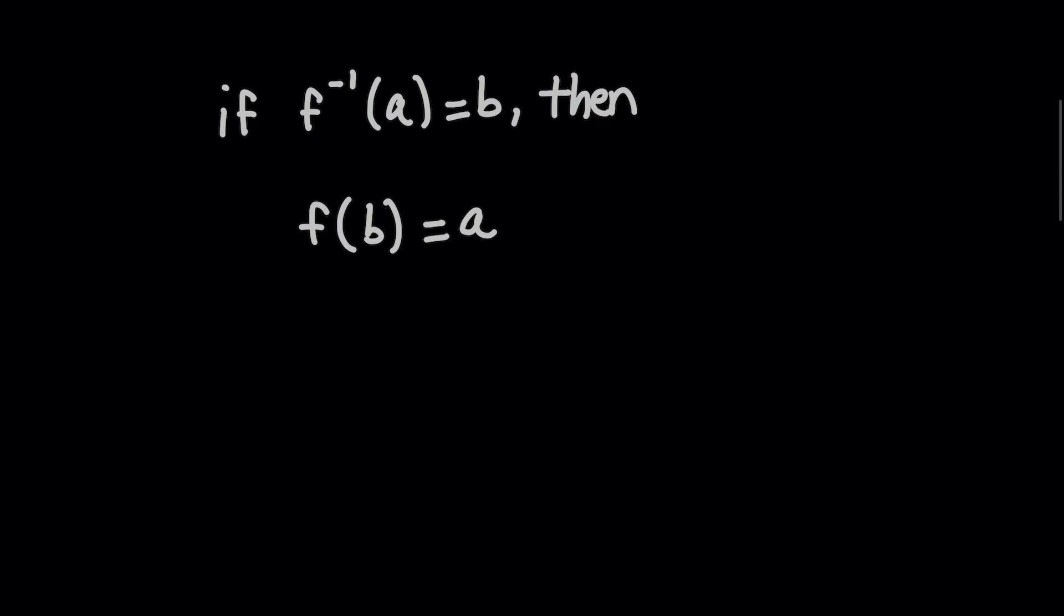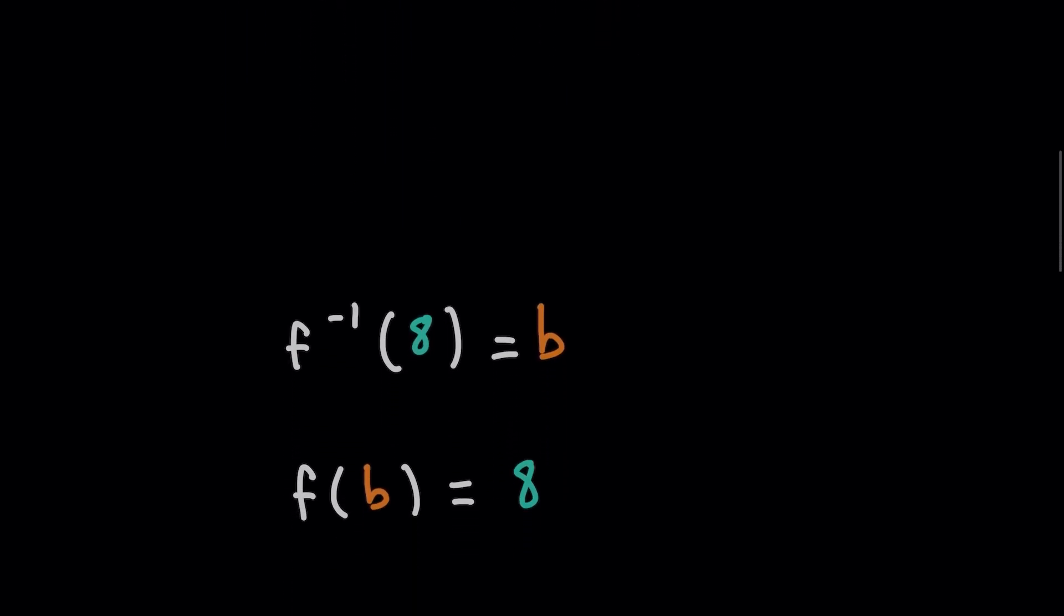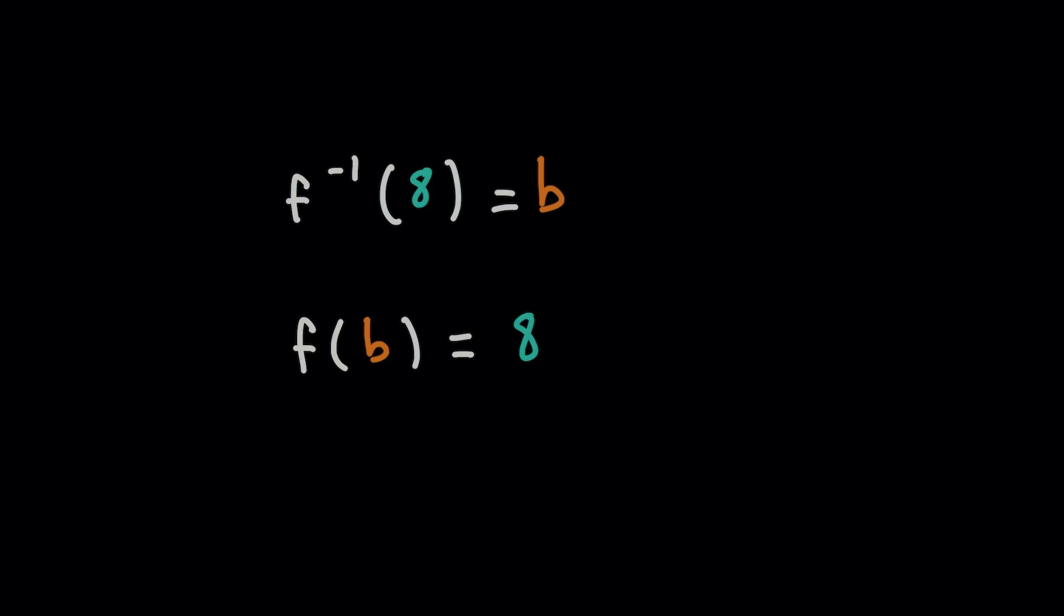So all you got to do for this problem is instead of wasting time trying to find the inverse function, take the value 8 I gave you, and we know that we're trying to find the inverse function evaluated at 8. I'll give it an output that I'm going to call a constant B.